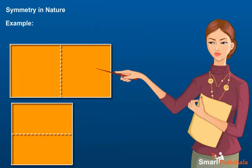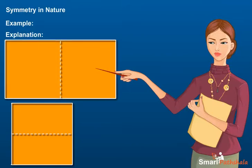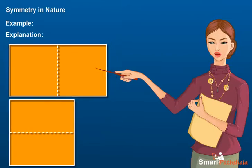Example: Name two geometrical shapes that are symmetrical. Explanation: The two geometrical shapes that are symmetrical are rectangles and squares.